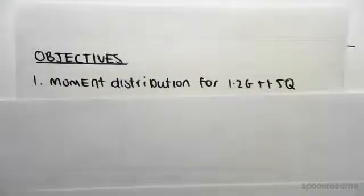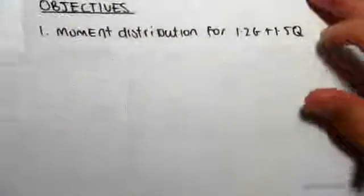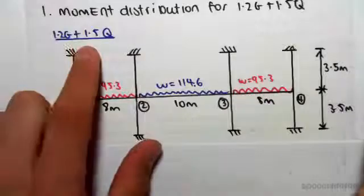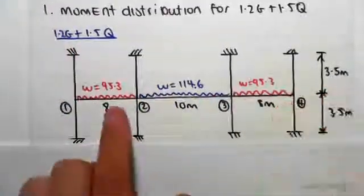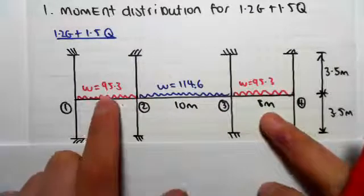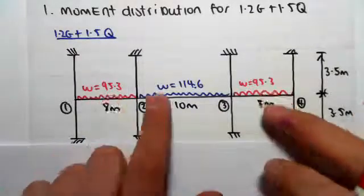Hey guys, the objective of this video is to do the moment distribution for the 1.2g plus 1.5q case. We're looking at the 1.2g plus 1.5q case, so I've taken the values from the previous video for w. For the outer spans we had 95.3 kilonewtons per meter, and for the inner span we had 114.6 kilonewtons per meter.